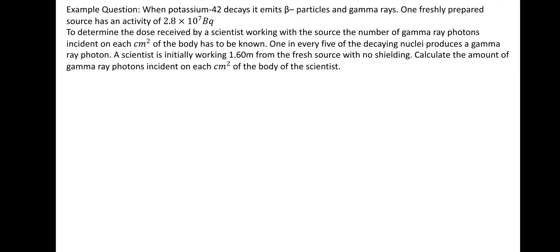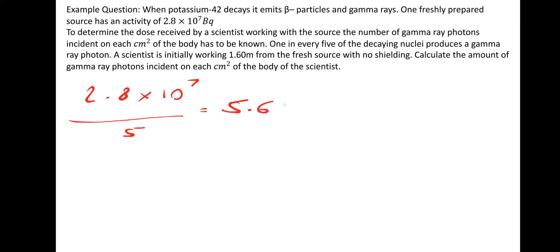So it sounds a bit complicated, but it's not too bad. First of all, one in five of the decaying nuclei produces a gamma ray photon. So we need to take the initial activity — 2.8 × 10⁷ — and divide that by 5 to give us the number of gamma ray photons. That gives us 5.6 × 10⁶.